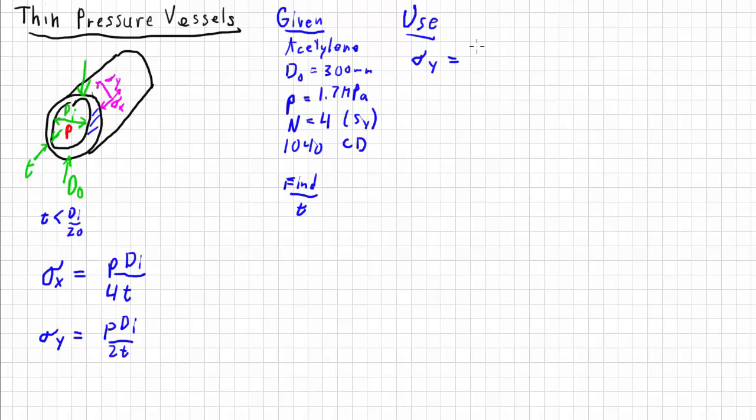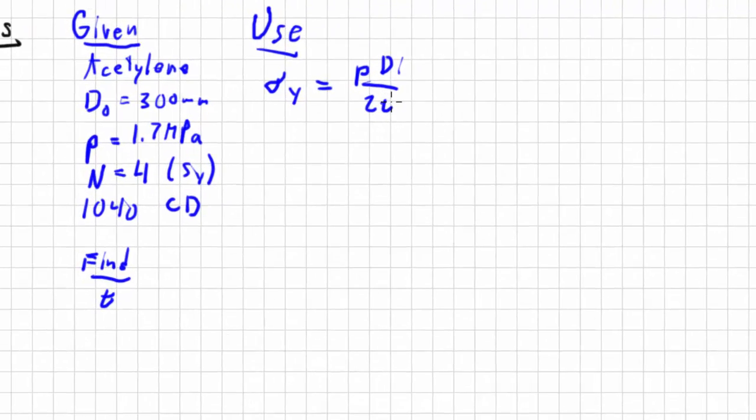So I'm going to use this one here, sigma y equals pressure times di over 2t. Now, it should be painfully obvious at this point that we don't actually know di. We've got p. We're trying to find t. We can find this pretty easily, but we don't know di. Because di is dependent on the outer diameter and the thickness. So it just complicates the math a little bit.